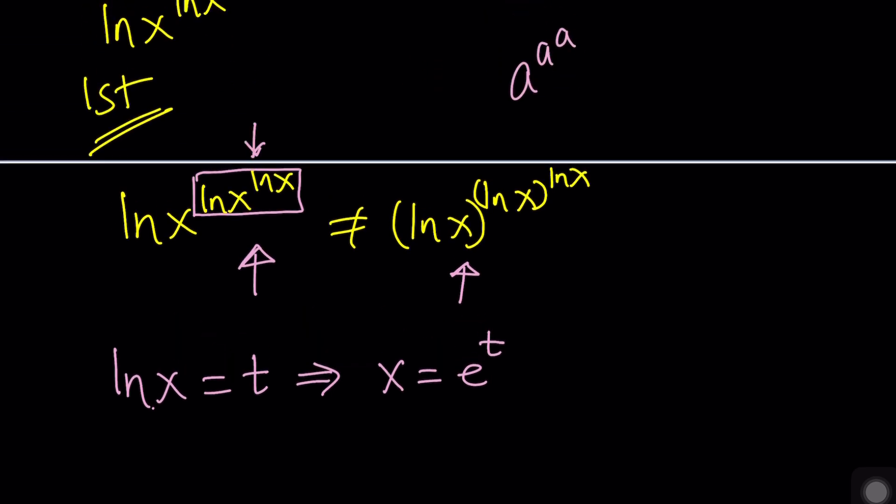The inverse function for the ln function is the exponential, and vice versa, right? Now, we've got to be careful. Like I said earlier, we're going to first treat the exponent, okay? Again, I think this kind of makes the distinction. On the left-hand side, the base is x. On the right-hand side, the base is ln(x). You see the difference? Okay, I hope you do.